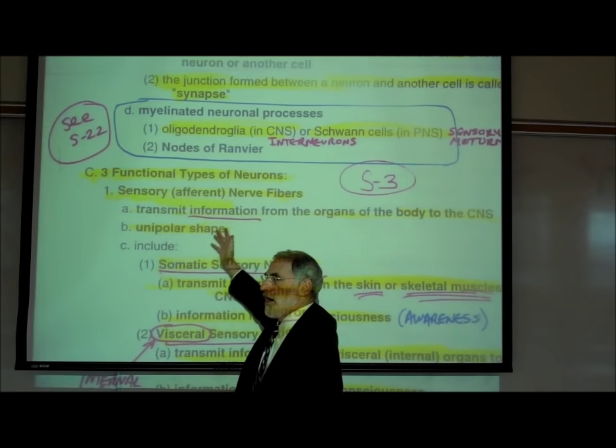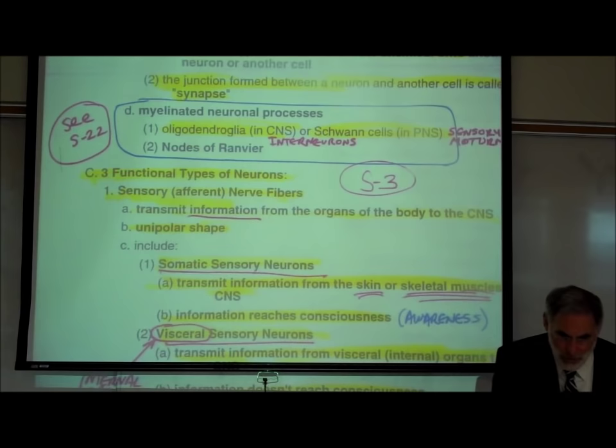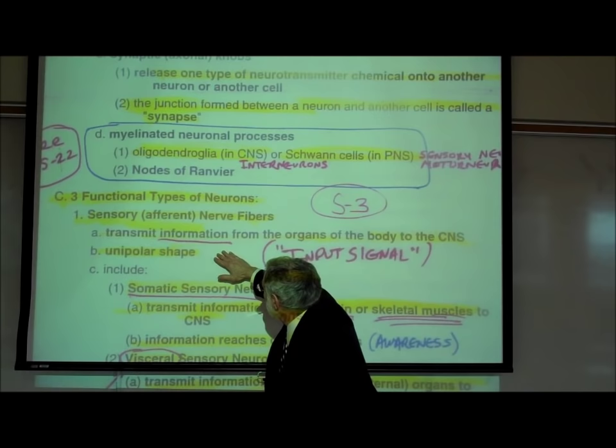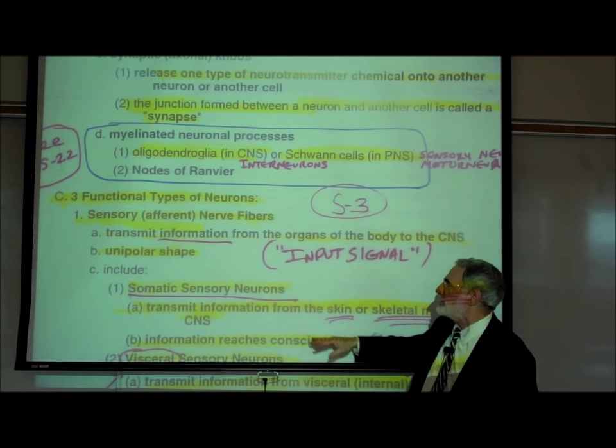Starting back on page S3: what are sensory or afferent neurons? Sensory or afferent neurons are neurons that transmit information from your body to your brain and spinal cord — that is the input signal. This information is coming into your central nervous system, providing the input signal.